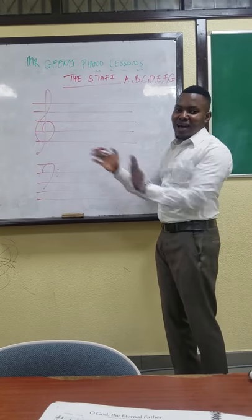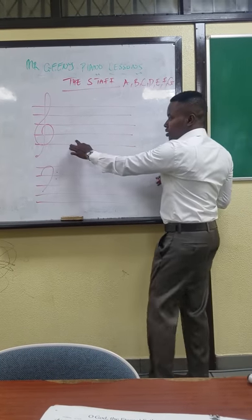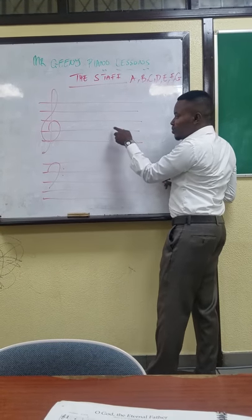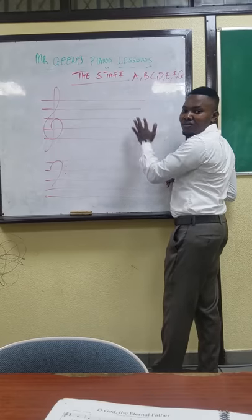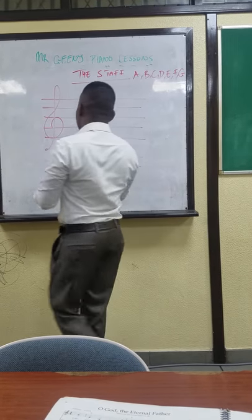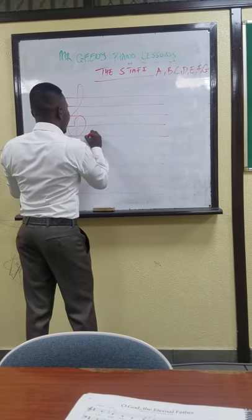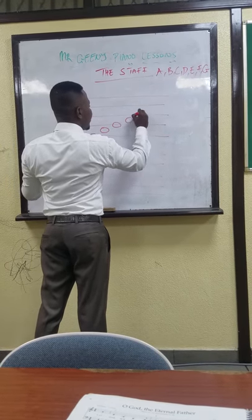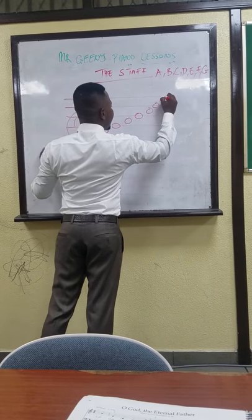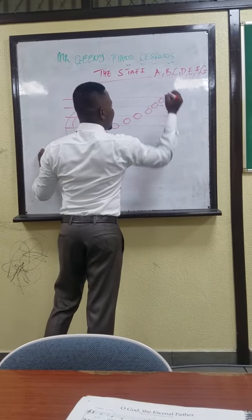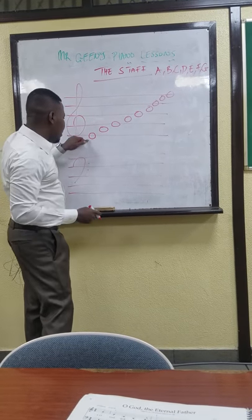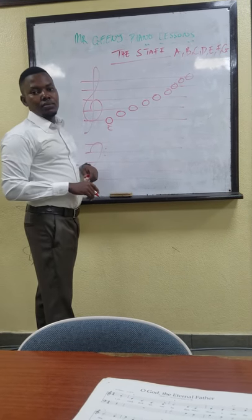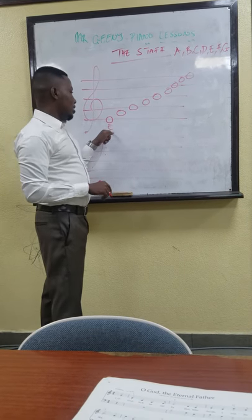They follow alphabetical order. So if I'm able to give you a clue of the first line, automatically you know the first space, and automatically you know the second line. Now let me use a semibreve to represent the lines. So all I'm saying is that if I'm able to give you the name of this first line — the name of the first line is called E.